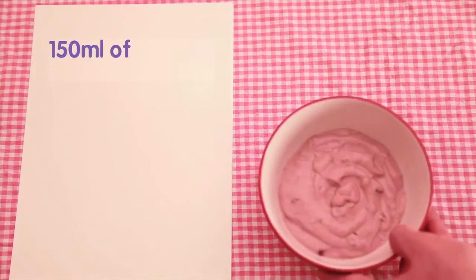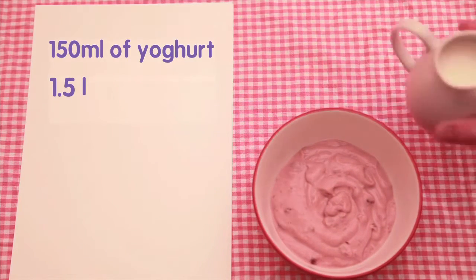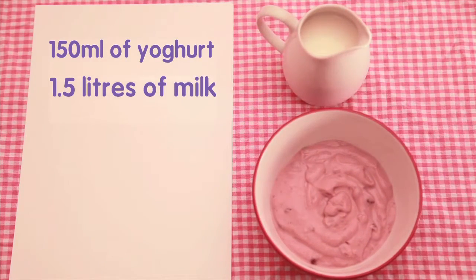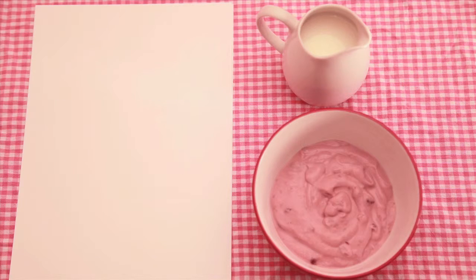Marian makes a fruit smoothie made up of fruit and 150 millilitres of yoghurt mixed with 1.5 litres of milk. Marian has 450 millilitres of yoghurt. How much milk will she need to make a fruit smoothie?